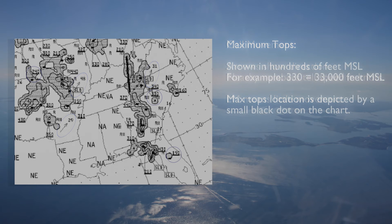Also depicted on the Radar Summary Chart are the maximum tops of the precipitation detected by radar, in hundreds of feet above sea level. A small black dot on the chart depicts the location of the maximum tops.